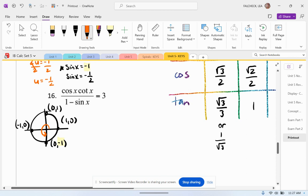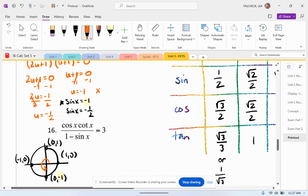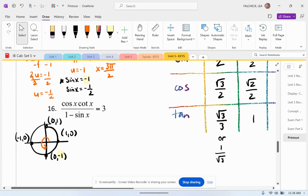Alright, so I'm going to go here. And we have x equals 3 pi over 2. Cool. So that was for this one. He's done. Now let's do this one.